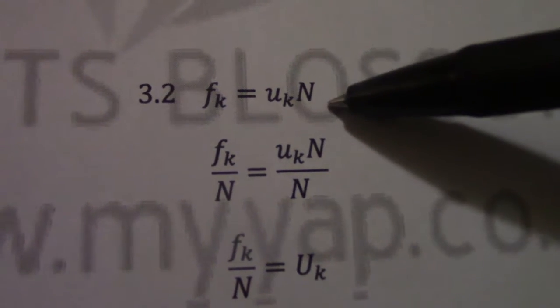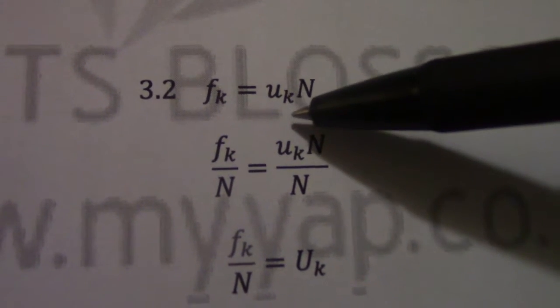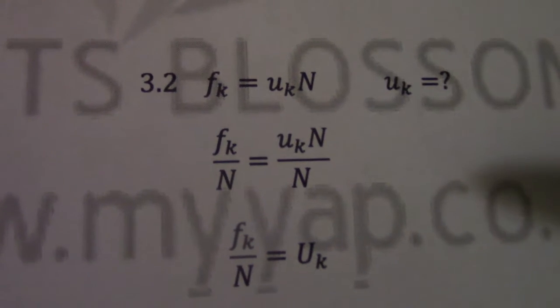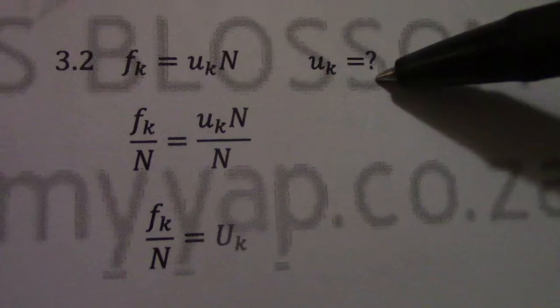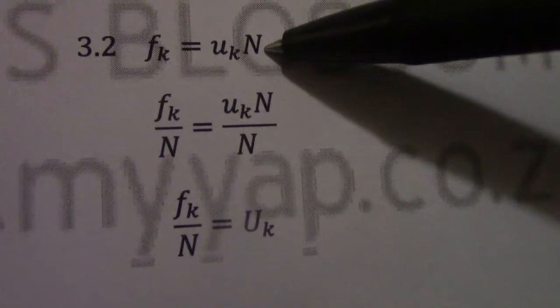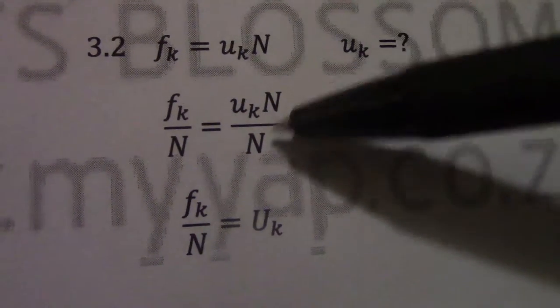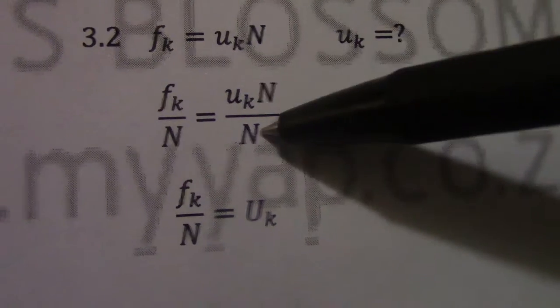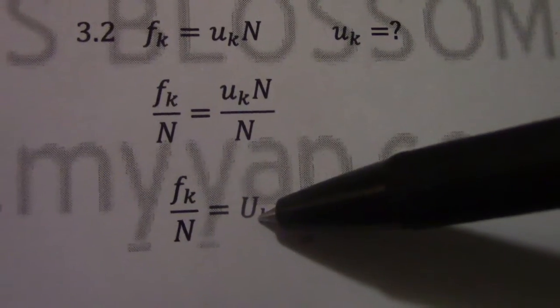3.2. Grade 11 we use this equation. Kinetic friction equals to mu k times n, or coefficient of kinetic friction times normal force. They want me to make mu k the subject of formula. So mu k times n. To get rid of this n I am dividing by n. And then n cancels, leave behind mu k.